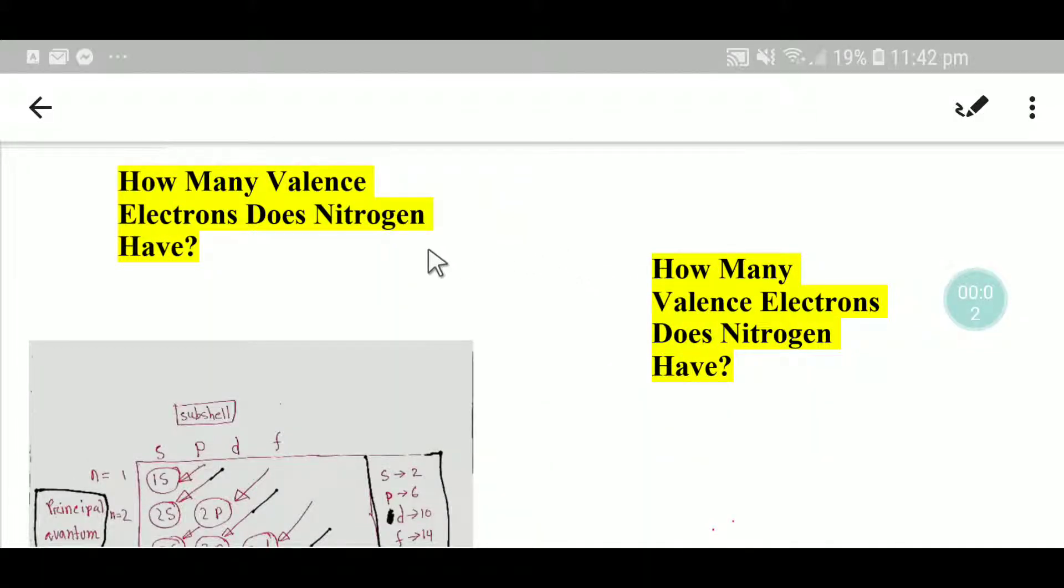Welcome to chemistry tutorial 360. Today we are going to learn how to find out the valence electrons of nitrogen. I will adopt just four steps to find out the valence electrons of nitrogen.